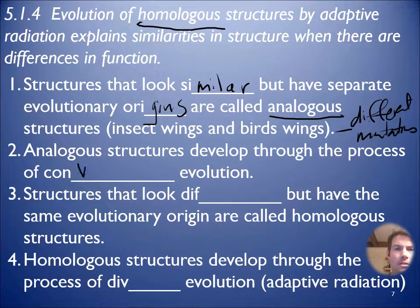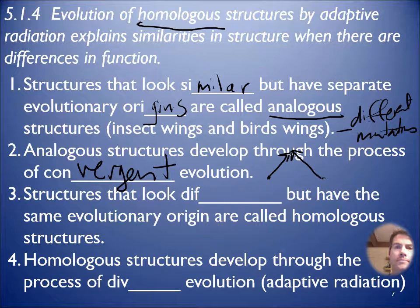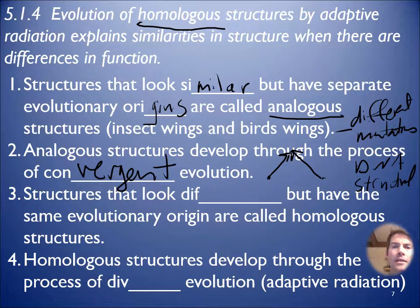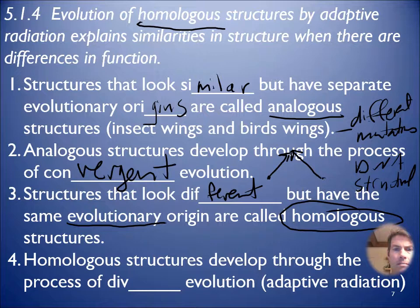Analogous structures describe this idea called convergent evolution - you start out here and then you converge onto an idea that works. It looks similar, looks related, but it isn't. We can tell that through DNA and careful structural analysis. Scientists knew about their separate origins even before DNA. Structures that look different but have the same evolutionary origin are called homologous structures, and that happens through divergent evolution - also called adaptive radiation. Darwin's finches are a good example of divergent evolution.